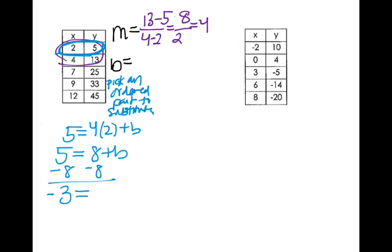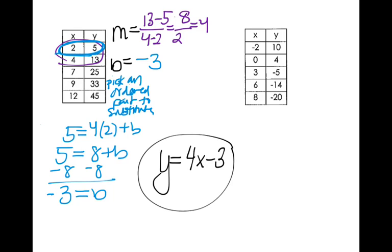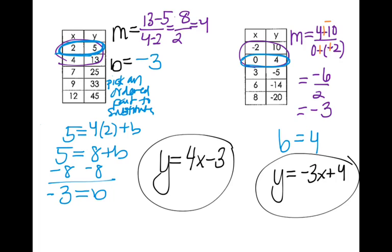Negative 3 equals b. So my final equation is y equals 4x minus 3. Okay, and I want you to hit pause, and I want you to try this next one on your own. So you'll have to pause again so that you can take a look at the work if you got something different than I did.